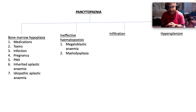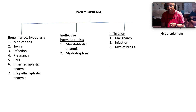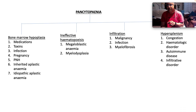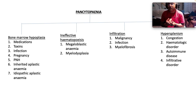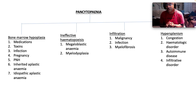Myelodysplasia as well. Infiltration is usually in the way of malignancy, infection — especially disseminated tuberculosis — myelofibrosis. And then hypersplenism on account of congestion coming from portal hypertension, or it could be some hematological disorder, often a malignancy, an autoimmune disease, or some kind of infiltrative disorder.